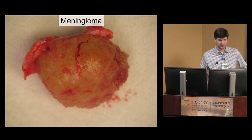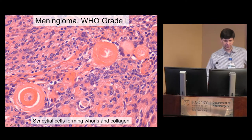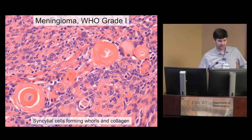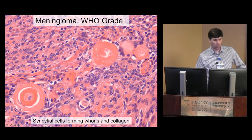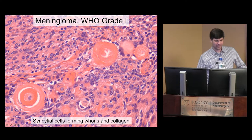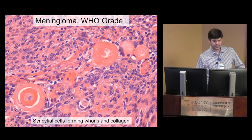Grossly, meningiomas are fleshy nodules seated on the dura. Under the microscope, you see a syncytial proliferation — a mat of cytoplasm with nuclei scattered throughout. The nuclei form whorls and meningiomas produce a lot of collagen, which gets laid down along the whorls and eventually calcifies to form a psammoma body. Individual nuclei have a characteristic appearance: round to oval with speckled chromatin and a small nucleolus.